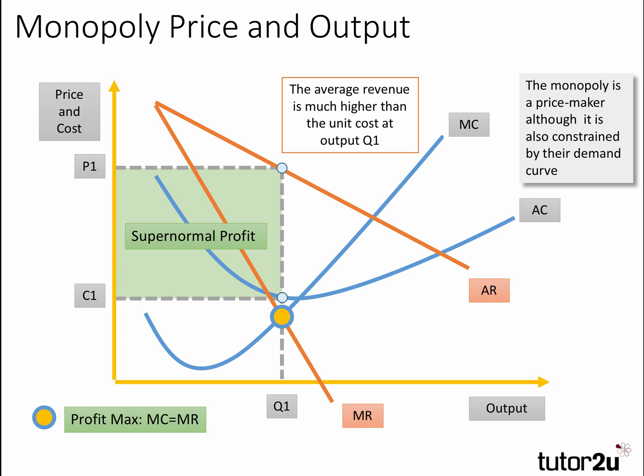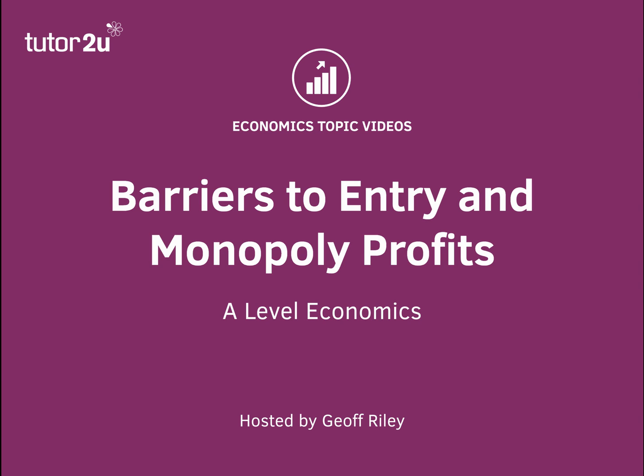Here's a monopoly diagram showing the equilibrium output where MC equals MR at an output of Q1. The price is P1 — the monopoly of course has price-making power. The cost per unit is C1, and the green shaded area shows the supernormal profits. Barriers to entry are the means by which those supernormal monopoly profits can be protected in the long run. Build chains of reasoning into your analysis.